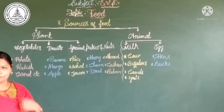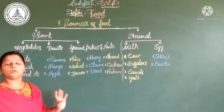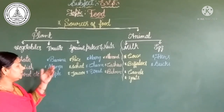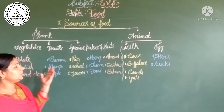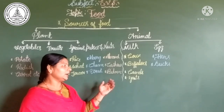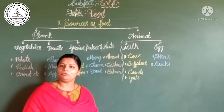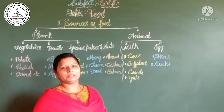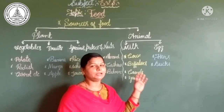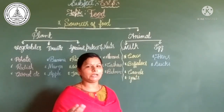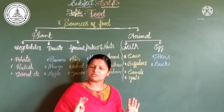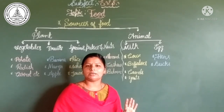In our daily food, we must compulsorily eat fruits, grains, pulses and vegetables. Daily we must drink milk, and at least twice a week we should eat eggs. If you want to eat eggs daily, that is well and good, children.